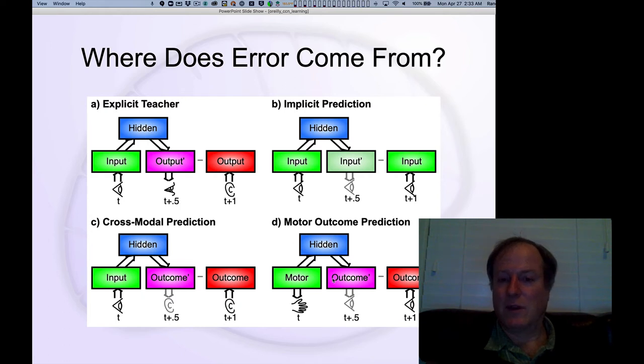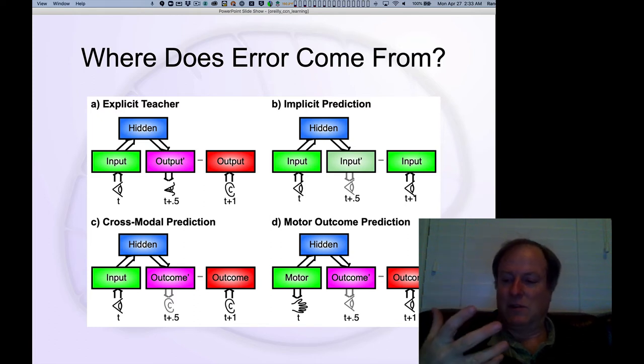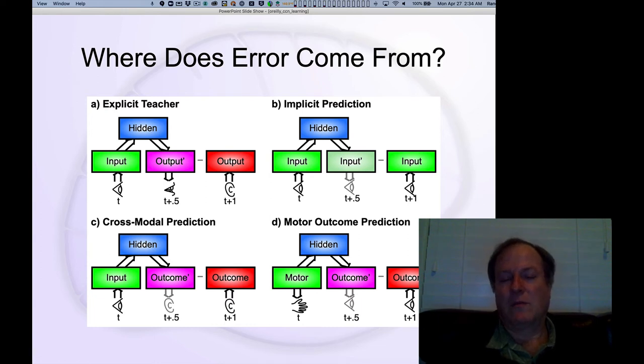And that's a vast source of predictive error-driven learning signals. But obviously, every time we reach, we miss what we're reaching for. That's an error. And so our hand doesn't go to where we expect it. That's represented visually, somatosensoryly. And so we have lots of sources of errors relative to our expectations about what happens when we generate different motor actions. This form of motor outcome prediction is also called a forward model. And it's something that people who do research on motor learning very much think is happening.